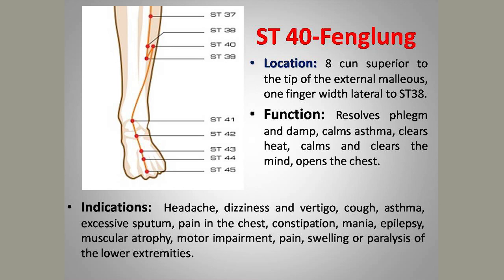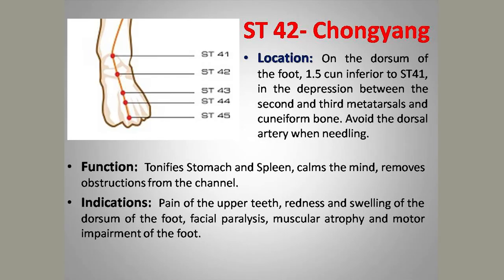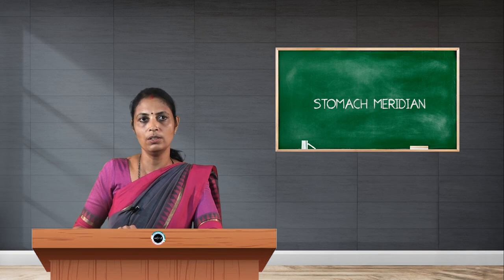Stomach 42, Chongyang, is an important Yuan source point, located 1.5 cun distal to the midpoint of the ankle crease. It is mainly used to tonify and enhance the energy flow. Needling technique is 0.5 to 1 cun.